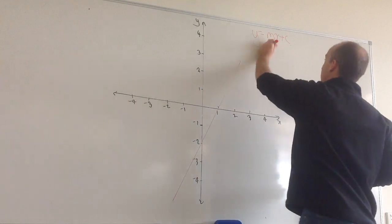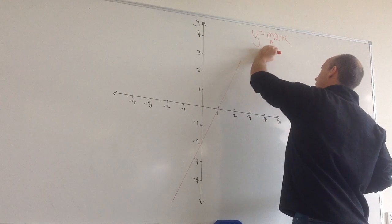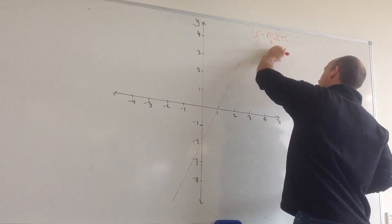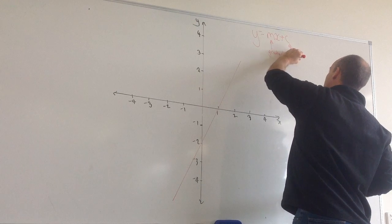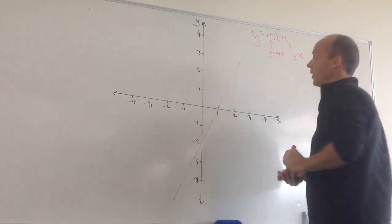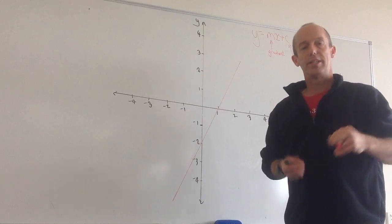And remember that the coefficient of the x term is the gradient and the constant at the end is going to be my y-intercept. So if I can work out what m is equal to and what c is equal to, I know what my equation is going to be.